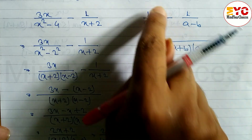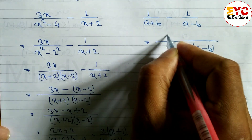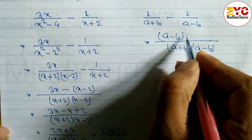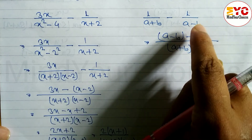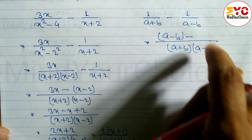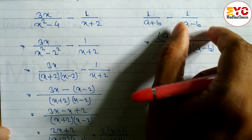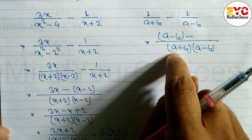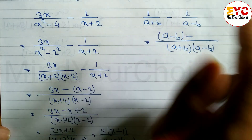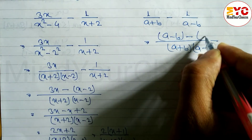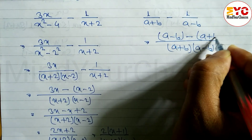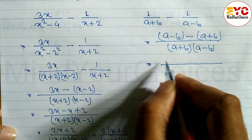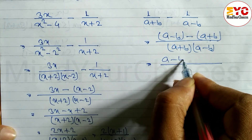Here there is a minus sign, so we write minus (a minus b). When we divide the denominator: (a minus b) and (a minus b) cancel, leaving (a plus b), multiplied by 1. So we write (a plus b) in the numerator.